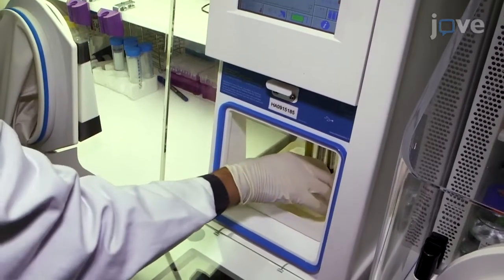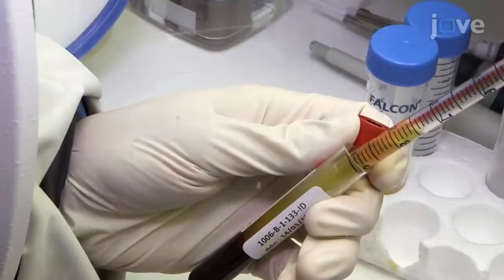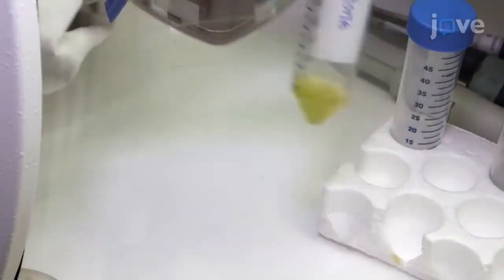Without disturbing the separated blood, transfer the tubes to the anoxic cabinet and transfer the plasma fractions to a 50 mL conical tube.